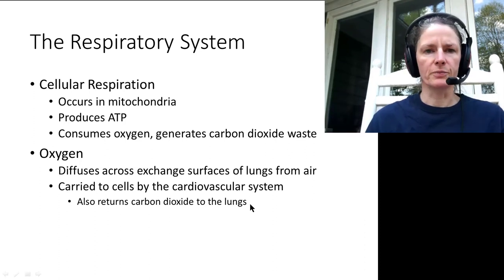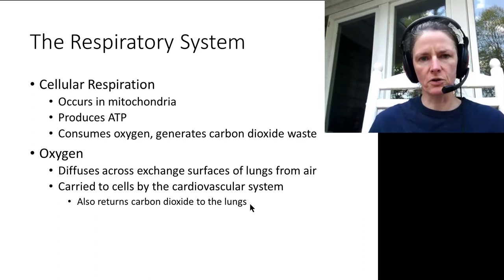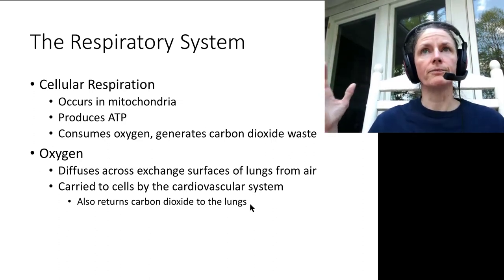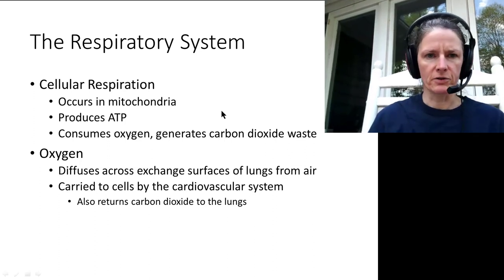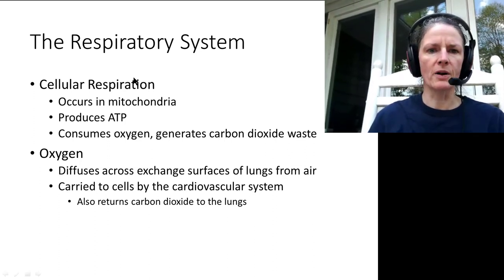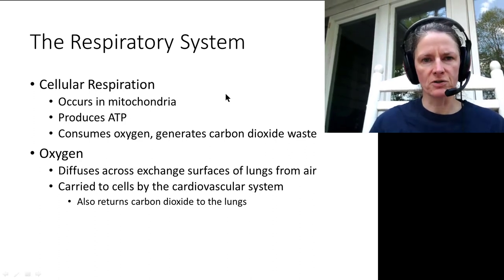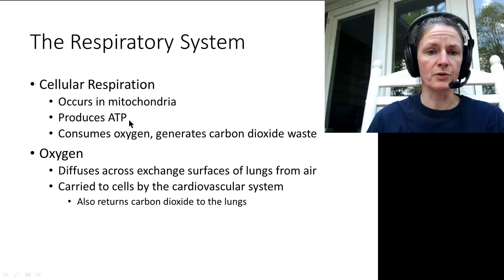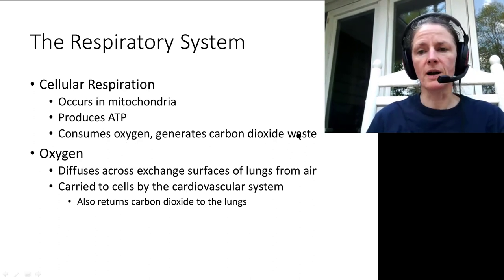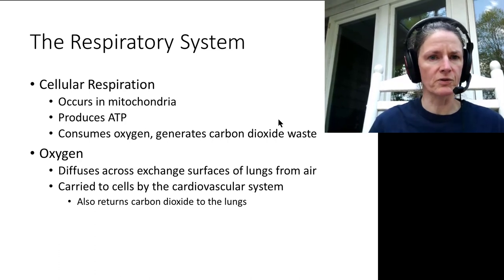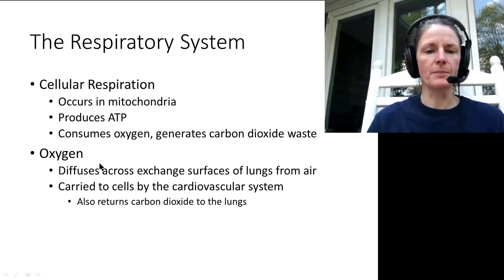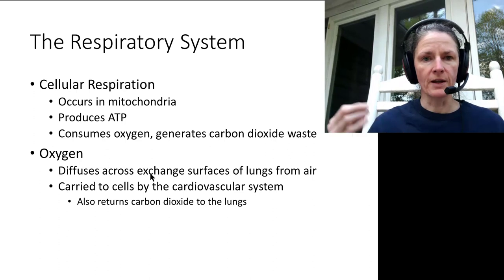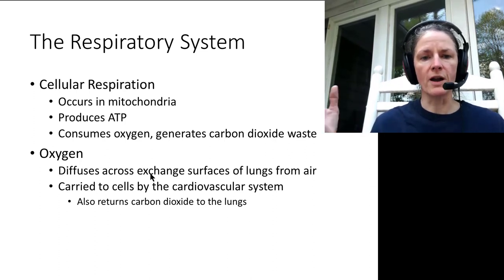We've got two types of respiration. External respiration is the process of getting oxygen from the air outside into the body. Internal respiration comes about as a result of cellular respiration — the exchange of oxygen and carbon dioxide at the cell — because our mitochondria use oxygen to produce ATP, consuming it and generating carbon dioxide as waste. That carbon dioxide is exchanged back to the circulatory system, taken to the lungs, and let off into the air. One of the main purposes of the lungs is to provide an exchange surface for the diffusion of oxygen coming in and carbon dioxide being off-gassed into the atmosphere.